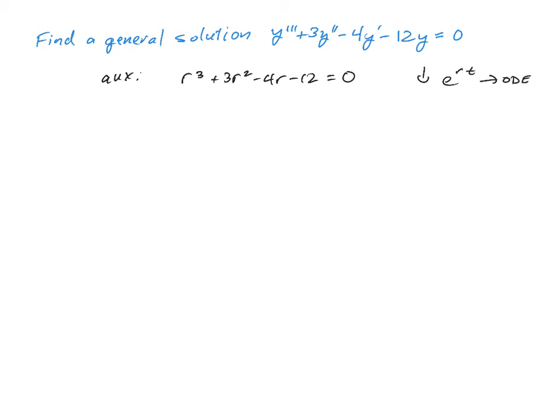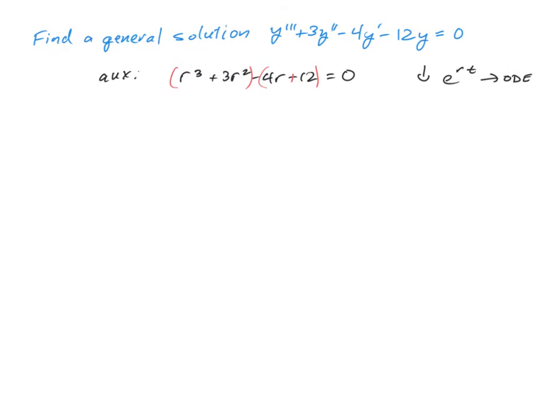You'll notice that we can put parentheses around the first and second pair of terms, and be careful with your sign change. For the first one we can factor out an r² leaves you with an r + 3, and then we can factor out a -4 leaves you with an r + 3 again.